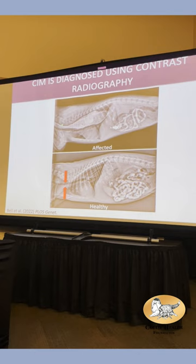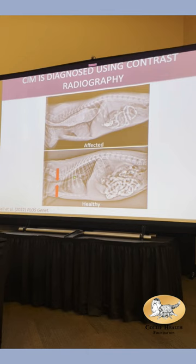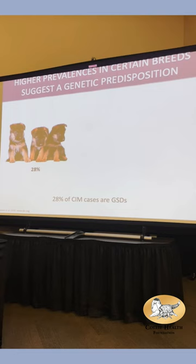On top we have an affected dog — you can see the barium spread all over the esophagus, which is stretched out. Very little barium made it through to the stomach and intestines. On the bottom, a healthy dog — a narrow tube, and all the food has moved into the intestines. A lot of dogs get euthanized if they can't be treated.